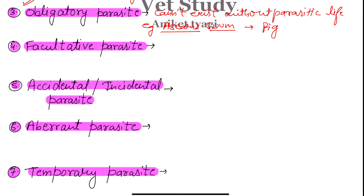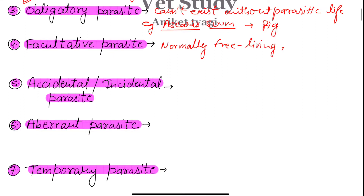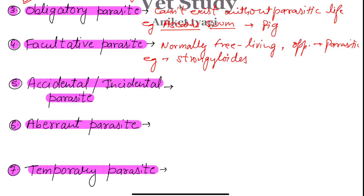Next we have the facultative parasite. Facultative parasites are those parasites which are normally free-living. They follow the parasitic life cycle only under adverse conditions or when given the opportunity. Normally they are free-living, but they become parasitic when conditions change. A good example is Strongyloides.